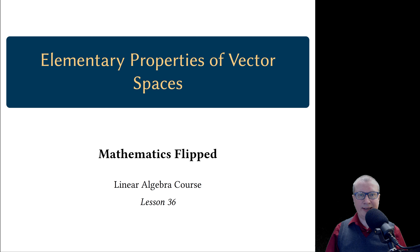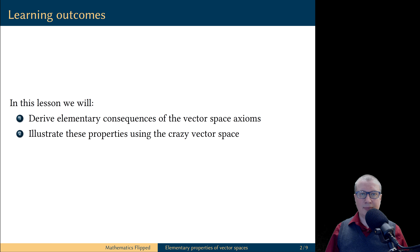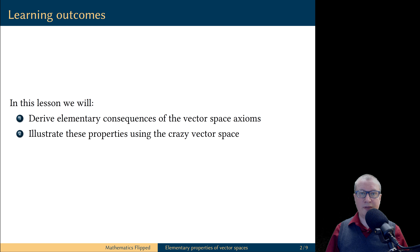Welcome friends. Igor is here and in this video we will derive several elementary consequences of the 10 vector space properties. We will discover several interesting properties of vector spaces which follow from the original 10 properties, because these are consequences of the vector space axioms that are not part of the initial list of requirements. We will also illustrate these properties using the crazy vector space as an instance of a vector space structure. Let's get started.